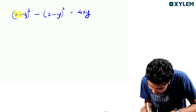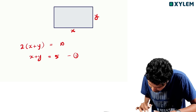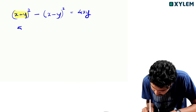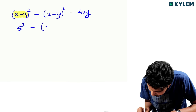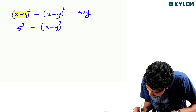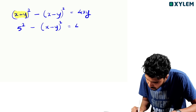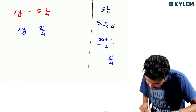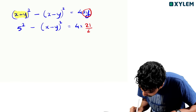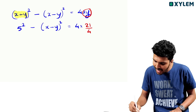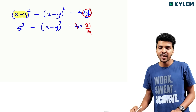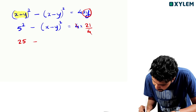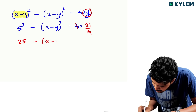x squared minus x minus y squared is equal to 4 into xy, which is 21 by 4. Part 2 gives 9 and 25.